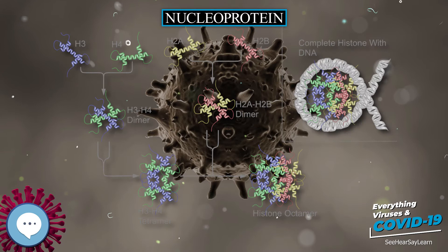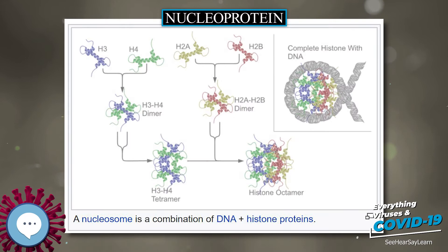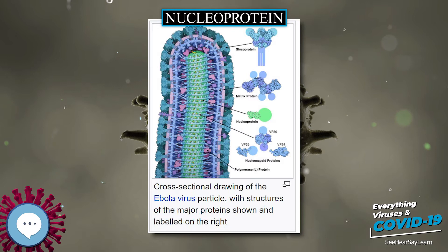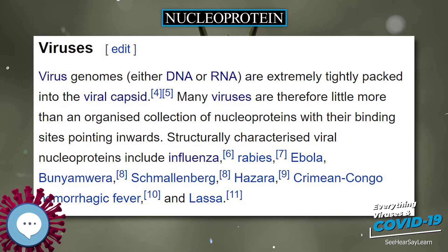Deoxyribonucleoproteins in this kind of complex interact to generate a multiprotein regulatory complex in which the intervening DNA is looped or wound. The deoxyribonucleoproteins participate in regulating DNA replication and transcription. Deoxyribonucleoproteins are also involved in homologous recombination, a process for repairing DNA that appears to be nearly universal. A central intermediate step in this process is the interaction of multiple copies of a recombinase protein with single-stranded DNA to form a DNP filament.